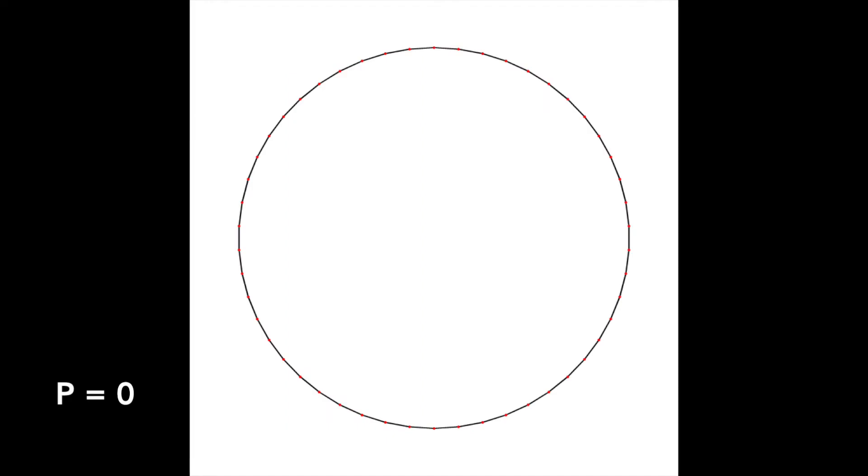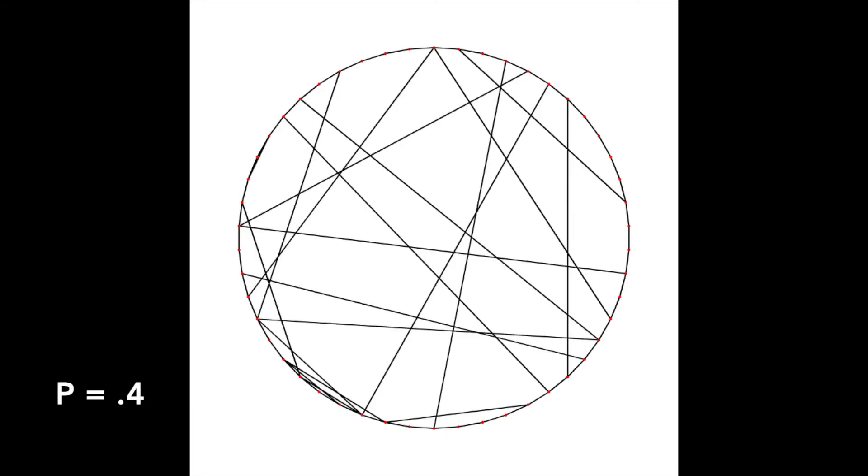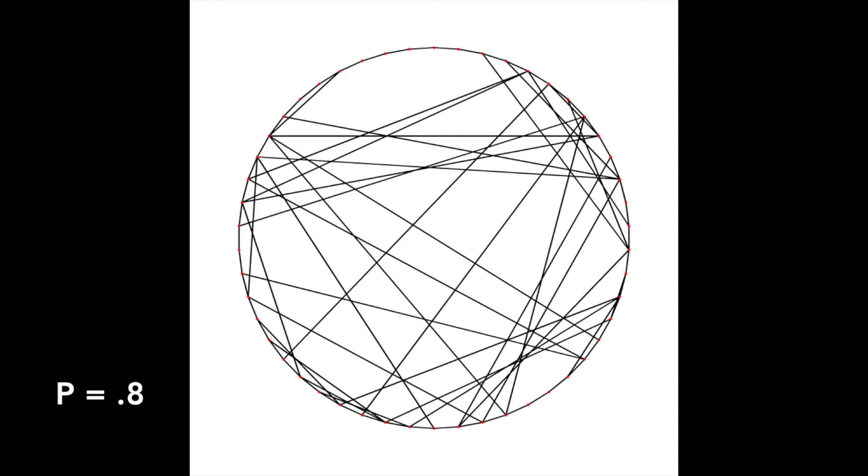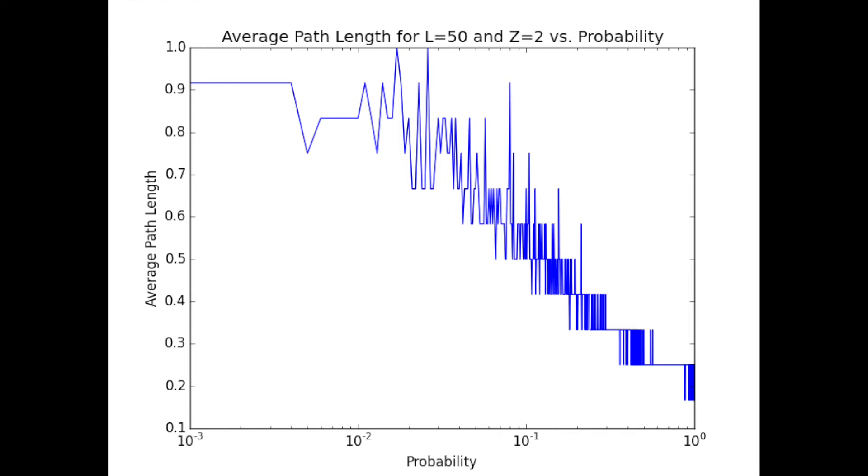We can examine the average path length in more detail by looking at many probabilities. Here is a network with 50 nodes, with each node connected to two neighbors. Increasing the probability adds shortcuts and decreases the average path length. This plot of the average path length divided by the average length at a probability of 0, which is 12, shows that the average path length decreases with increasing probability that edges are added.